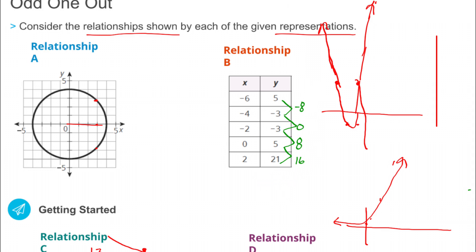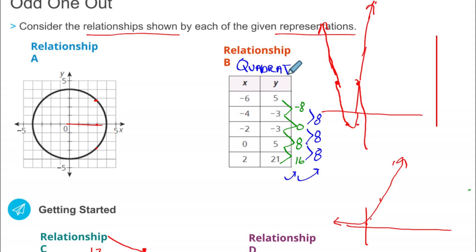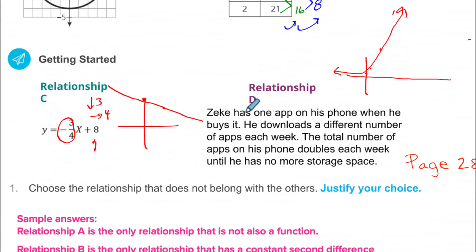Now take the differences of those differences: from negative 8 to 0 is up 8, 0 to 8 is up 8, 8 to 16 is up 8. Notice the second layer gives the same number every time — this is the trick to identify a quadratic relationship: find the differences, then find the differences of the differences, and if that second level is constant, it's quadratic. If it takes three rounds, it would be cubic — meaning x to the third power.